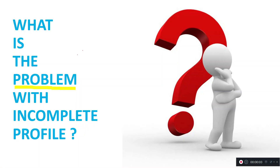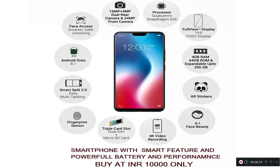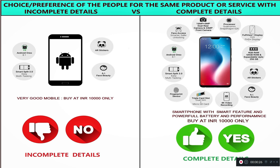Now, the problem with your incomplete profile. Suppose you need to buy a mobile, and an ad profile of the mobile with a few features and description is shown to you. And for the same mobile, another ad profile with a detailed feature and description is shown to you. In the first case, you will not be willing to buy the mobile because all the functions and features are not shown, which creates a very bad impression, so you will reject it.